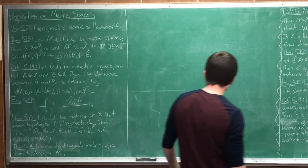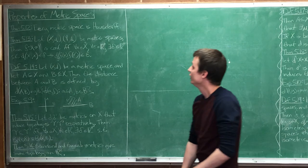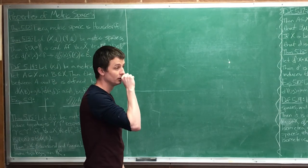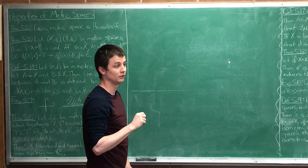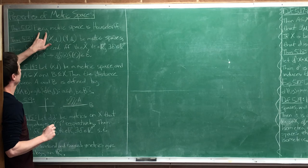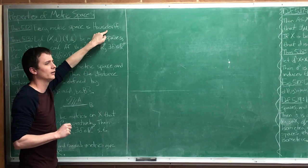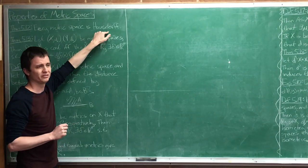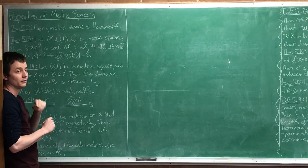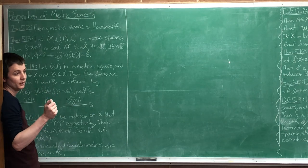So, properties of metric spaces - we'll just start proving that they have them and introduce a couple of definitions as we go. The first thing we're going to prove is that metric spaces are always Hausdorff. Maybe stop for a second and explain how this sentence even makes sense, because Hausdorff is a property of topological spaces. Every metric space gives us a topology - we can induce a topology from a metric space.